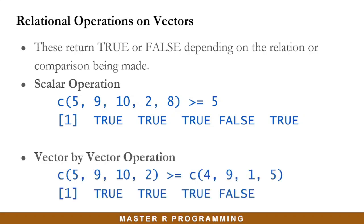In a vector-by-vector operation, every element in the first vector is compared to each corresponding element in the second vector, returning true where that condition is satisfied and false where that condition is not satisfied.